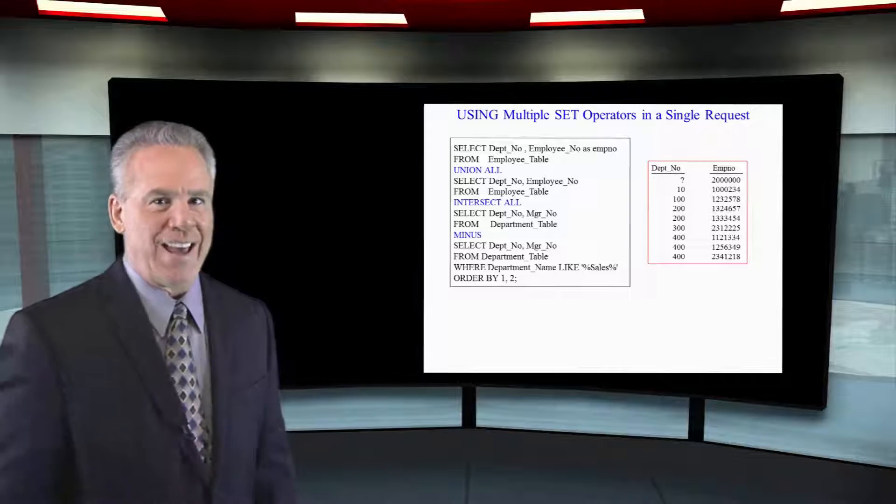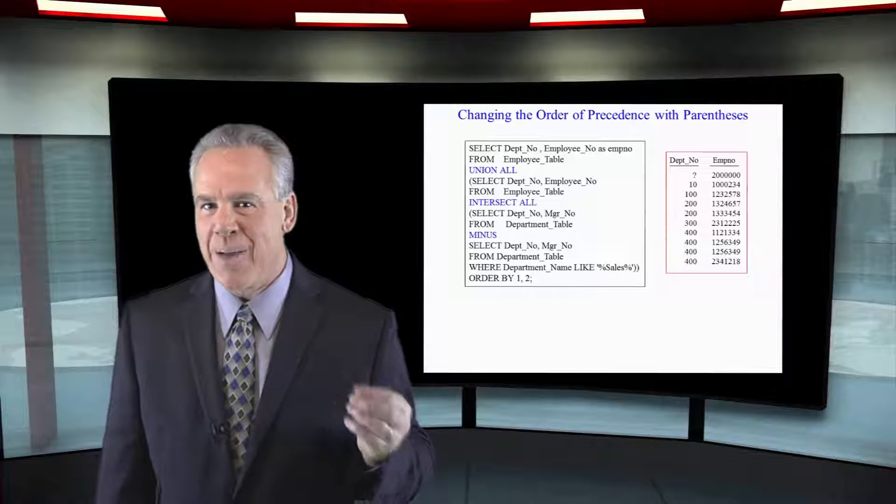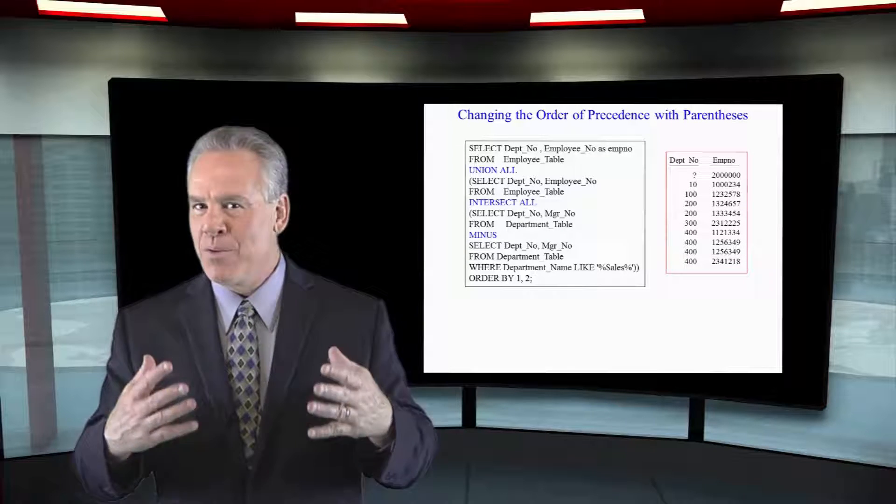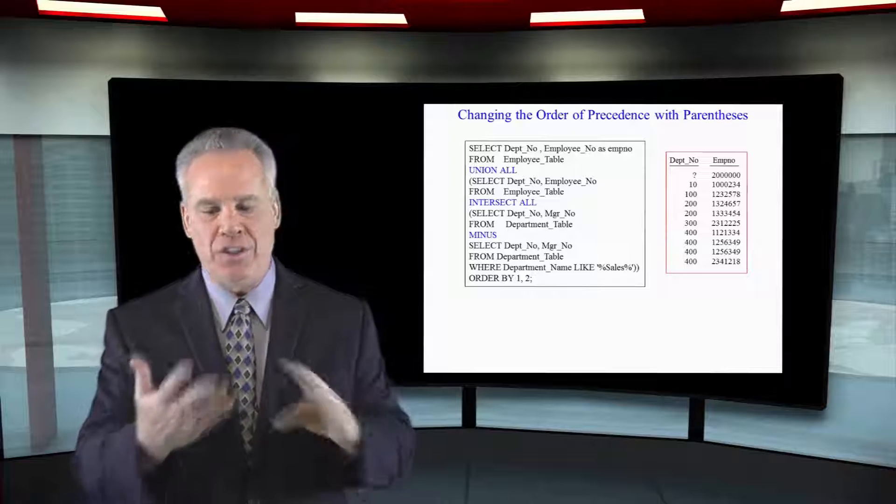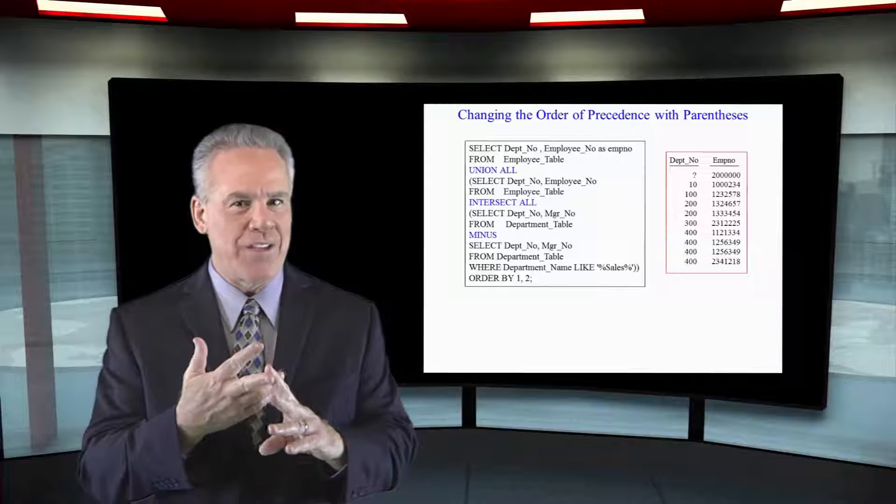But we can change that with parentheses. Here we again have a group of set operators. And remember the natural order of precedence is unions first, intersect is second, and acceptor minus is third.